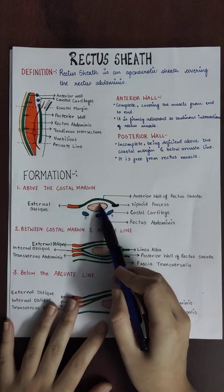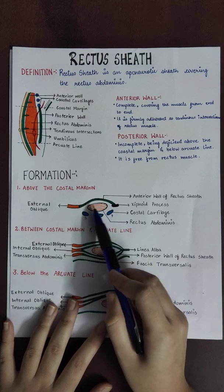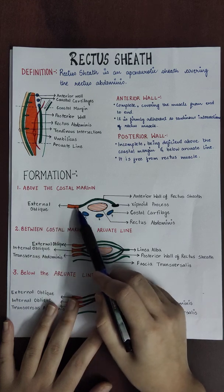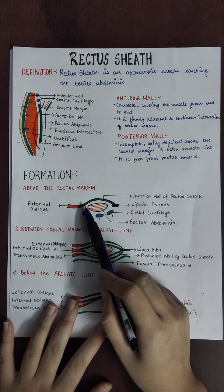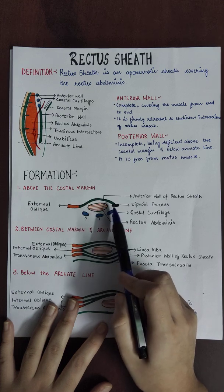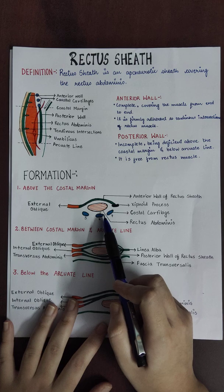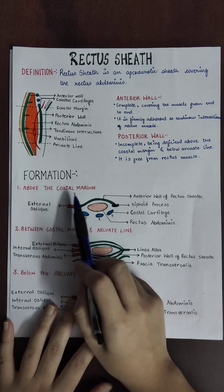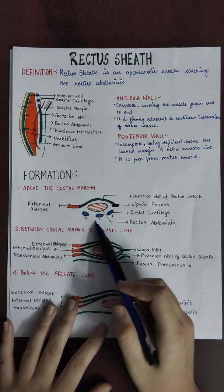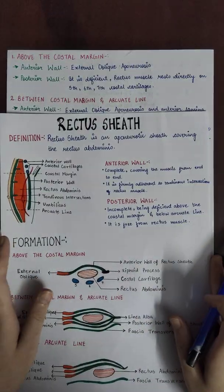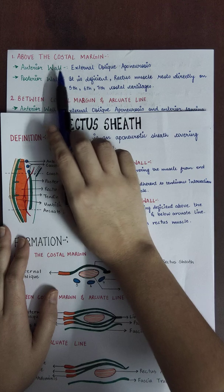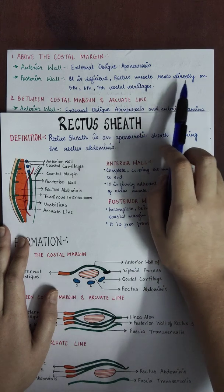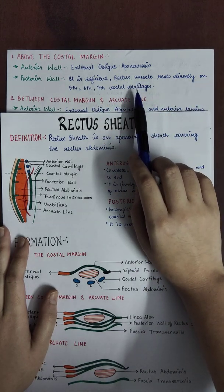This is the rectus abdominis muscle — this is the anterior side and this is the posterior side. The anterior wall is formed by the external oblique muscle aponeurosis. The posterior wall is not present above the costal margin, so the rectus abdominis above the costal margin lies on the costal cartilage. Above the costal margin: anterior wall is formed by external oblique aponeurosis, and the posterior wall is deficient. The rectus muscle rests directly on the 5th, 6th, and 7th costal cartilage.